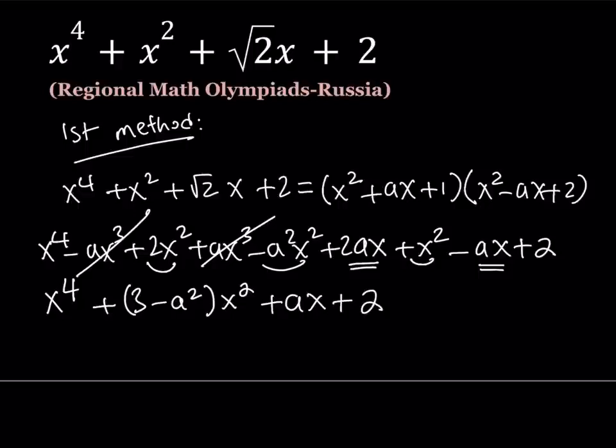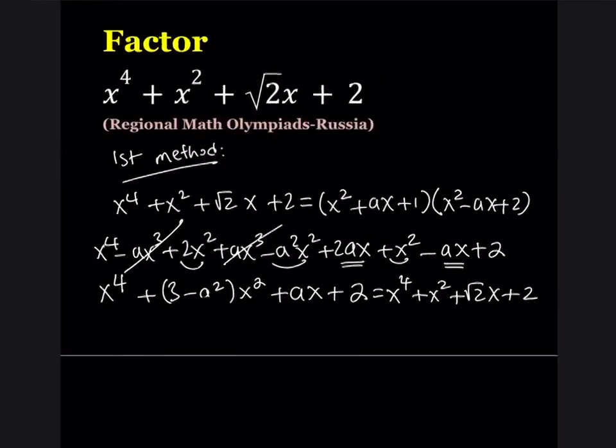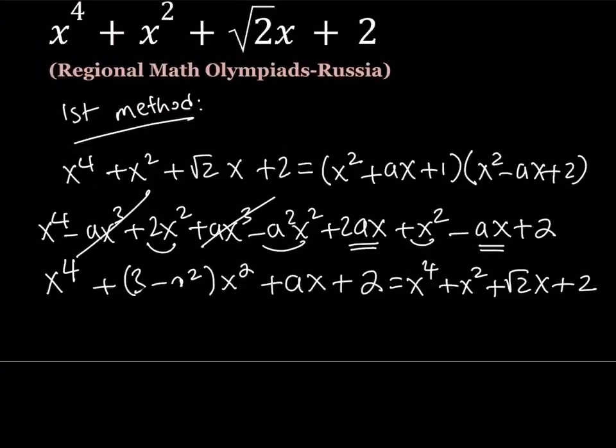Now this expression is supposed to equal my original one, which is x^4 + x^2 + √2x + 2. Now if you equate the coefficients or set them equal to each other, you'll notice that this has to be a one. Let's clean it up a little bit. So this is supposed to be a one. So this needs to be... Let me go ahead and change it here.